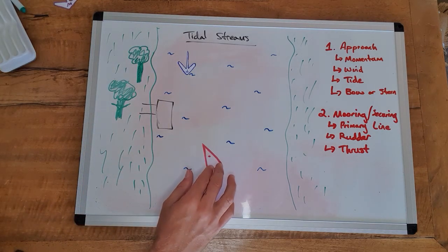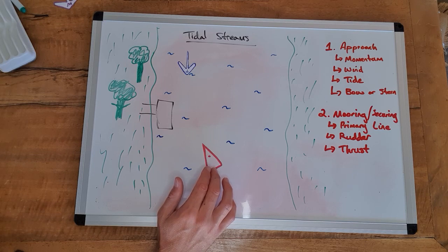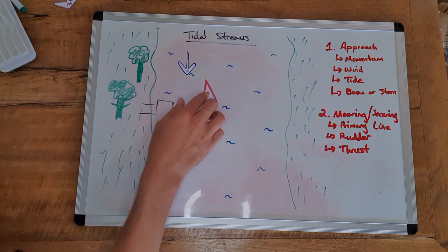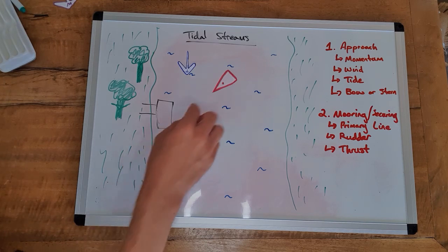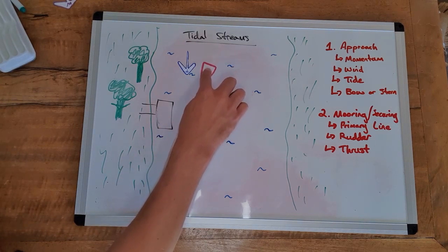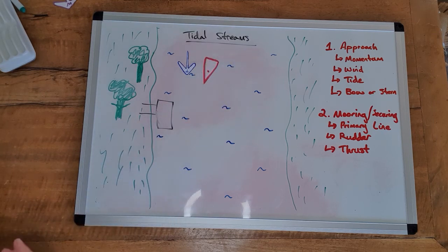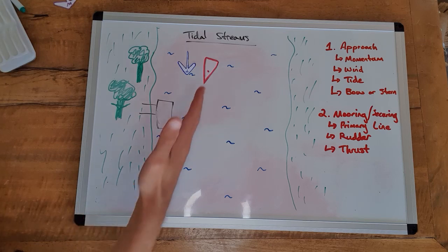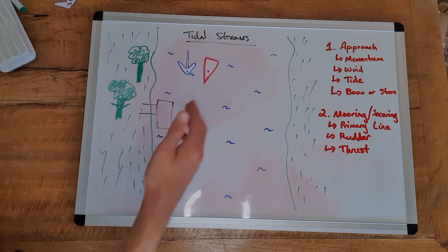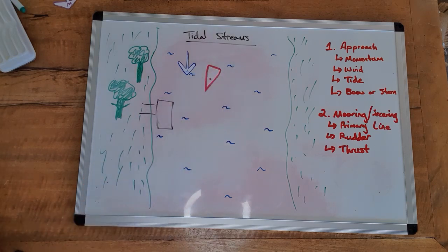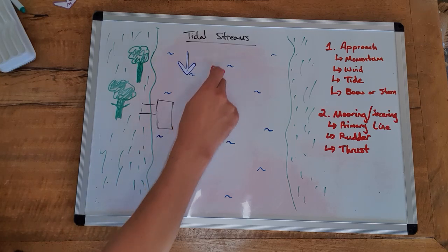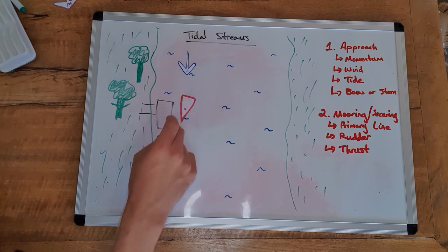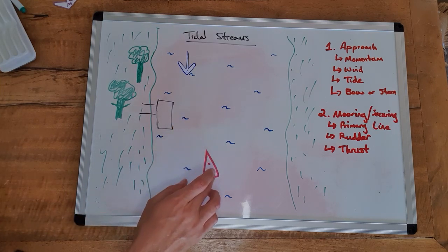So in the absence of any wind, if this was a tide that was running at say one and a half knots, if we approach the dock from this angle to maintain water flowing over our rudder in a forwards direction, we'd have to be going faster than 1.5 knots to offset the water flow. So we'd have to be coming this way faster than one and a half knots, probably more like two to two and a half, and that's going to be a very quick approach onto that dock.